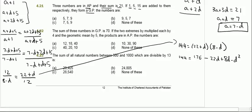Rearranging: 144 minus 176 gives minus 32, equal to minus 14d minus d squared. This simplifies to d squared plus 14d minus 32 equals 0.